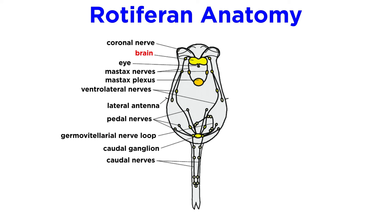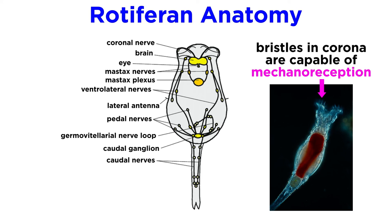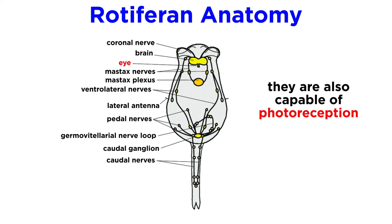Rotifers have a rather large bilobed brain, at least in proportion to their body, and this brain is dorsal to the jaws. They are capable of mechanoreception through the bristles in their corona, which allow them to detect and respond to certain kinds of stimuli, most notably touch, sound, and changes in pressure or posture. There are also photoreceptors in the form of up to five pit eyes that respond to light, and chemoreceptors in the form of sensory pits located in the head region.